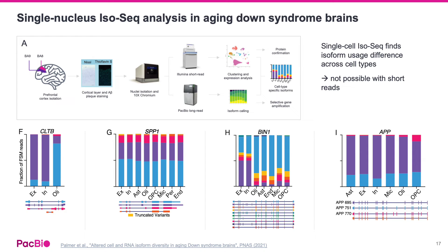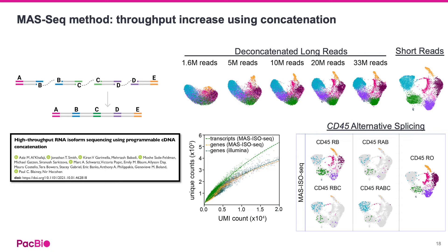In this publication, the authors applied short and long reads to sequence single nuclei from aging Down syndrome brains. They applied standard single-cell RNA-seq with short reads to identify cell clusters, then added full-length isoform information from single-cell IsoSeq data. They discovered novel isoform diversity not observable with short reads across different cell types. In particular, microglia showed the highest isoform diversity, and the authors were also able to identify differential isoform usage across cell types.